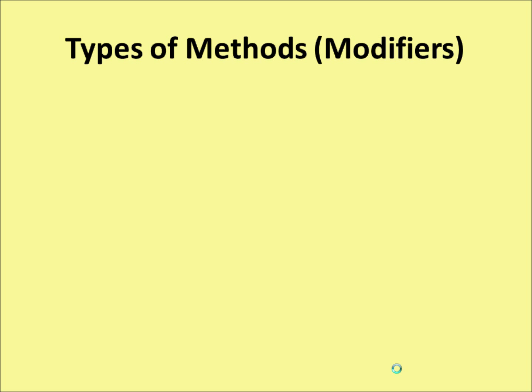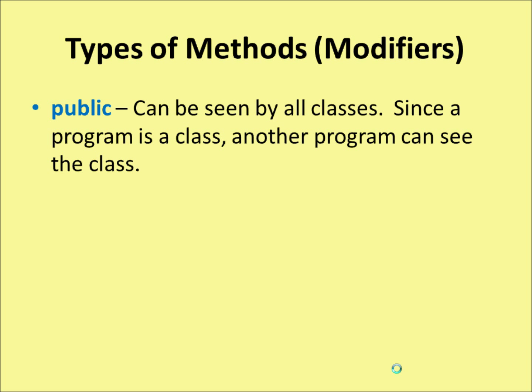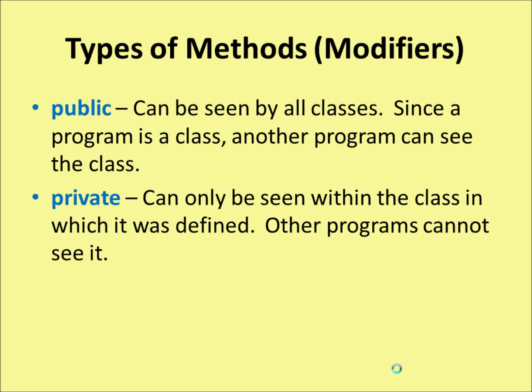So what types of methods are there? These are called modifiers. Well, you can have a method that's public — that can be seen by all classes, and since a program is a class, another program can see that class, and therefore a public method can be seen by another program. You can have private methods, which can only be seen within the class in which they were defined. Other programs cannot see it, and that's useful where you want to do a bit of work that you don't want the user to be able to mess around with.